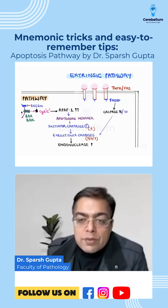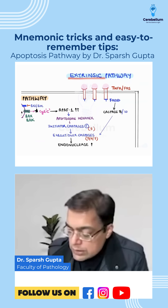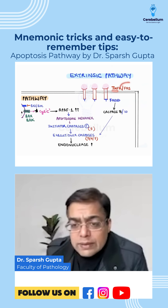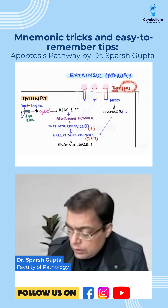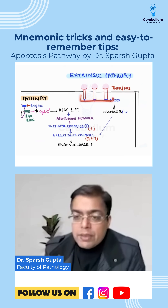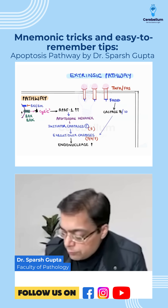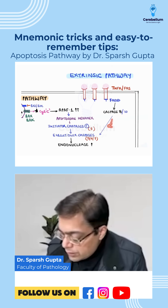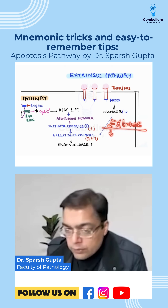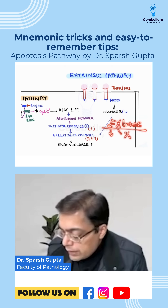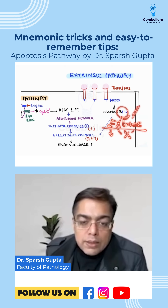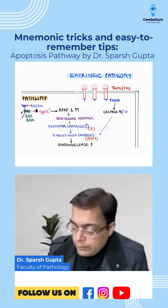In the extrinsic pathway, something coming from outside is TNF. TNF is responsible for causing trimerization — meaning three receptors coming together — which causes activation of caspase 8 and 10. A helpful trick: for extrinsic, write it with E for 8 and X for 10, so caspase 8 and 10 are involved in the extrinsic pathway.